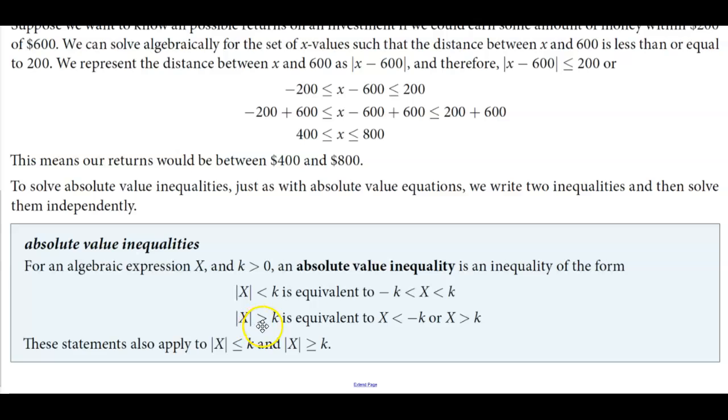If |X| > k, it is equivalent to X < -k or X > k. And it also applies to when it's less than or equal to or greater than or equal to.